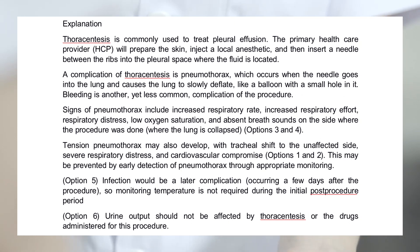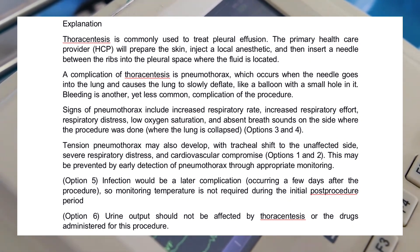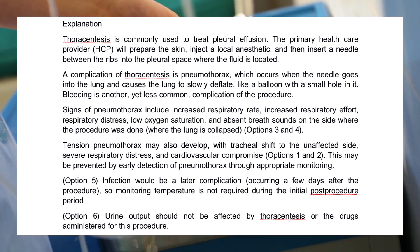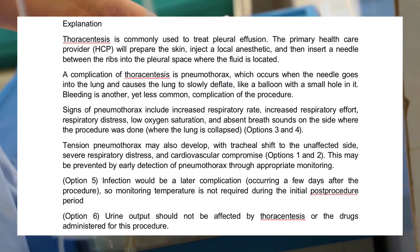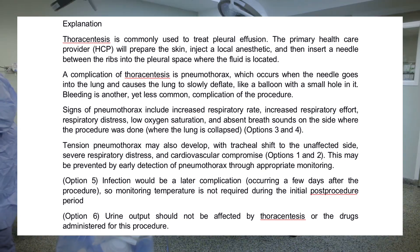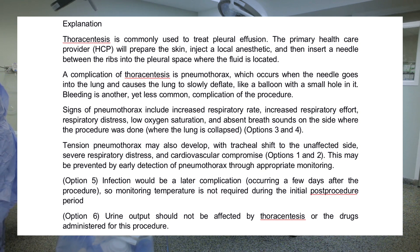Signs of pneumothorax include increased respiratory rate, increased respiratory effort, respiratory distress, low oxygen saturation, and absent breath sounds on the side where the procedure was done (options 3 and 4). Tension pneumothorax may also develop, with tracheal shift to the unaffected side, severe respiratory distress, and cardiovascular compromise (options 1 and 2). This may be prevented by early detection of pneumothorax through appropriate monitoring.